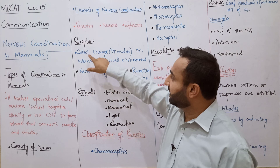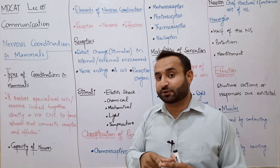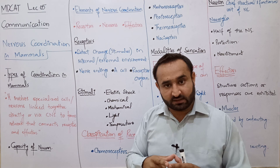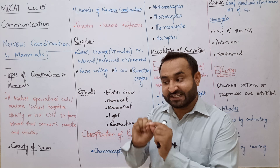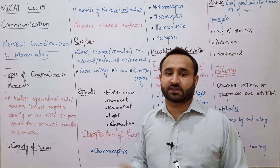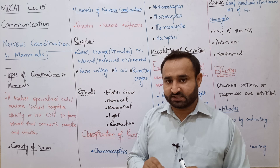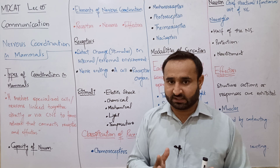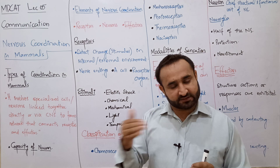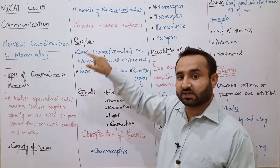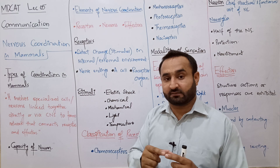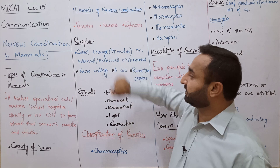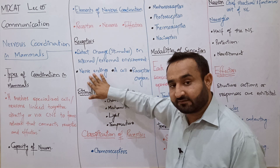A receptor is a cell, free nerve ending, or an organ which detects change in the internal as well as external environment. Any change in the internal or external environment of an organism is called a stimulus. Internal stimuli اور external stimuli دونوں ہوتے ہیں۔ The cell, structure, organ, or part of a cell like a nerve ending used to detect stimuli is called a receptor.